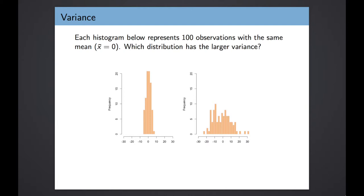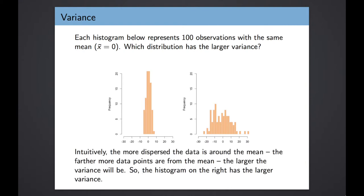Here I have two histograms, each representing 100 observations and both centered around the same mean of 0. Think about which distribution has the larger variance — which is more dispersed around the mean. Intuitively, the farther more data points are from the midpoint, the larger the variance is going to be. The histogram on the left has a tall skinny distribution tightly centered around the mean of 0, without a lot of variation far below or far above the mean — so distribution one has a pretty low variance. Distribution two, on the other hand, has a lot of observations pretty far above and pretty far below the mean — they're a lot more spread out — so the variance for the second histogram is a lot larger. To reiterate: the histogram on the right has the larger variance, the histogram on the left has the smaller variance.